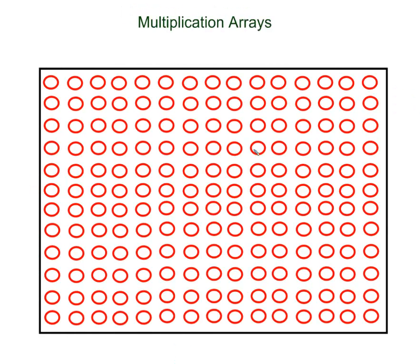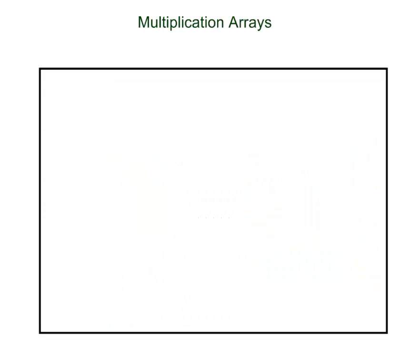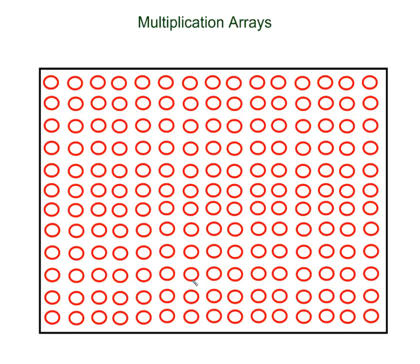What happens when I have a really big array with a lot of pieces? Notice the arrays are getting bigger and bigger. Eventually we are not going to want to draw all these pieces — we are going to want to transition to an open array, because an open array will allow us to find larger amounts. So let's take a look at this array. How many rows do I have? 1 through 12. So I have 12 rows of what? 1 through 15. So I have 12 rows of 15. Now 12 times 15 would give us the answer, but that is not something I know off the top of my head.